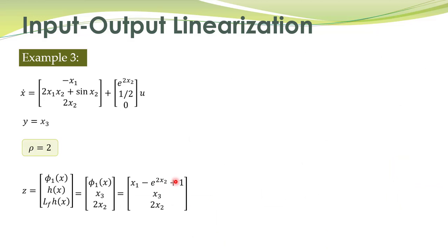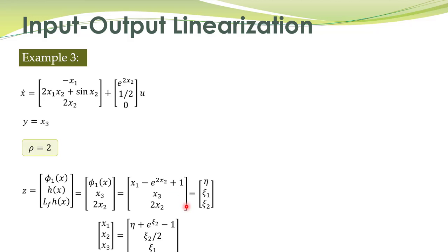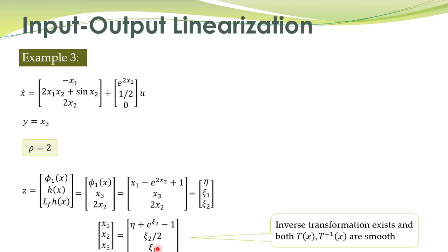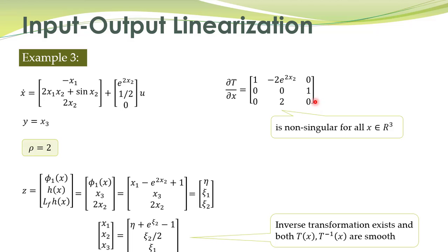We take this transformation and check whether it is a diffeomorphism. We check whether the inverse transformation exists — it does, and it is smooth, meaning the derivative of this transformation and its inverse both exist. Hence this transformation is a diffeomorphism. We can also check by taking the partial derivative of T with respect to x, which comes out to be this matrix.